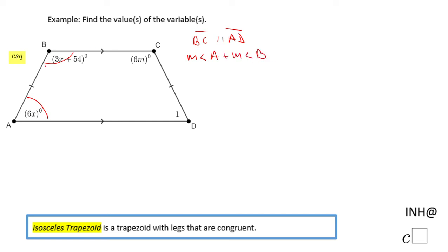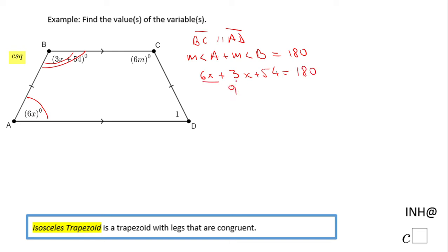These two angles are not equal, so I'll mark it that way: equals 180. Now I can replace angle A with 6x and angle B with 3x plus 54, which gives me an equation in x. Combining the x terms gives 9x.